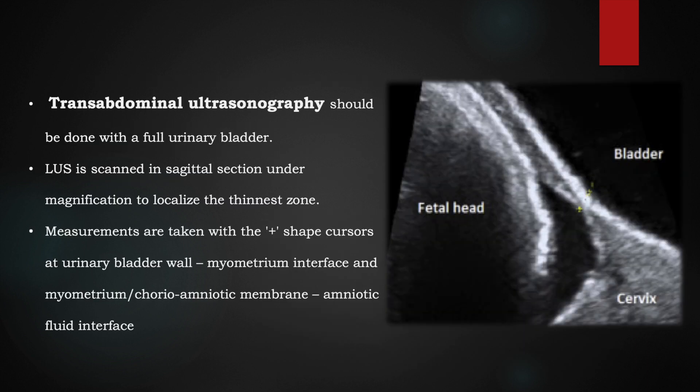For transabdominal ultrasound, we have to do it with an overdistended or distended bladder and take a proper midline sagittal section along the linea alba, magnifying it so we can see the lower uterine segment. We have to localize the thinnest area, and the measurement is taken by placing the cursor between the urinary bladder-wall-myometrium interface and the myometrium-amniotic fluid interface.